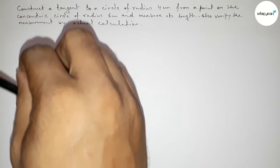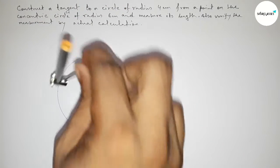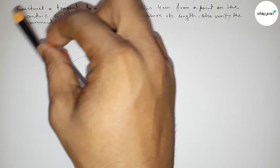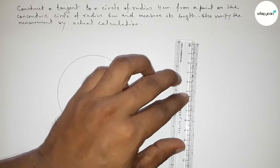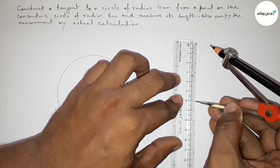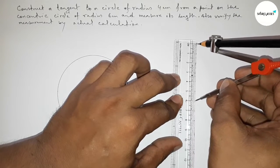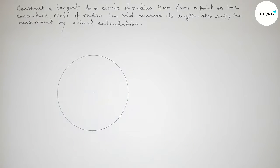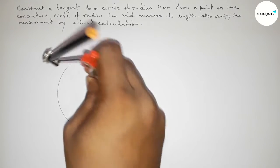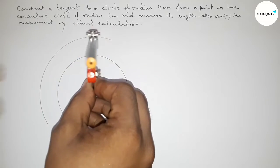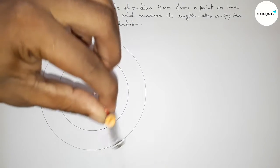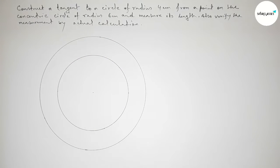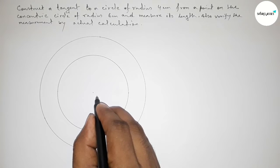Now we have to draw another circle of radius 6 centimeters with the same center, since the two circles are concentric circles. Taking 6 centimeters on the compass and using the same center, we draw another circle of radius 6 centimeters.